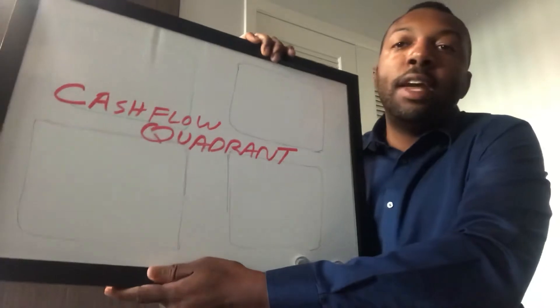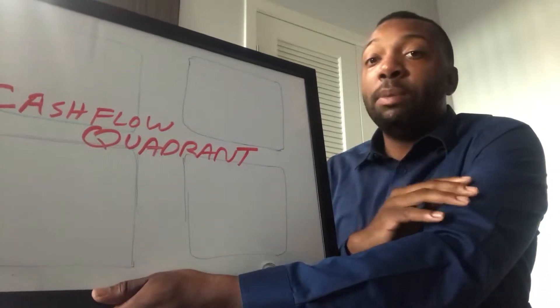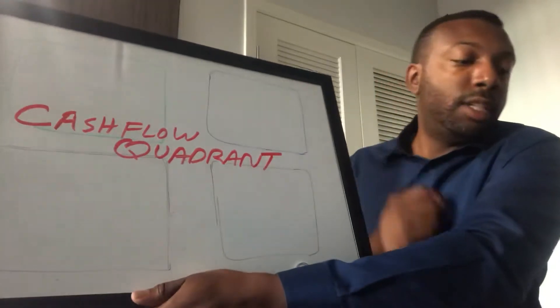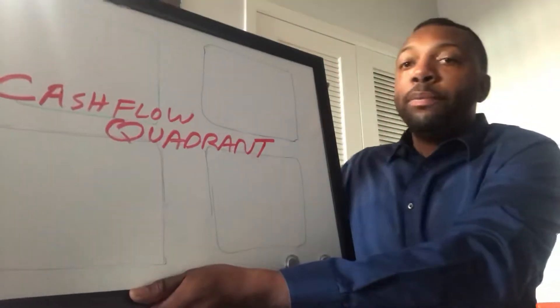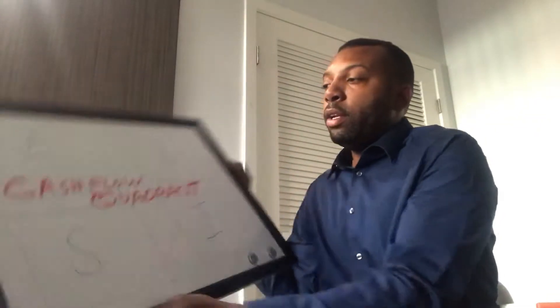The Cash Flow Quadrant is about the four ways people earn income — four ways. A lot of people think it's just legal or illegal, but Robert Kiyosaki pioneered these four categories in the late '90s. The first is as an employee, the second is self-employed, the third is a business owner, and the fourth is an investor.